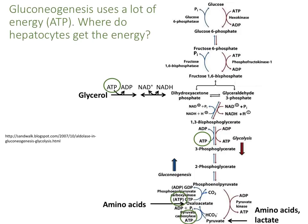Note also that gluconeogenesis requires a lot of energy — a lot of ATP. The carboxylation of pyruvate requires ATP. PEPCK requires ATP or GTP. There is also ATP utilized in the middle steps. If we're coming in from glycerol, there's ATP utilized there as well. Remember, the bottom part of this pathway involves 3-carbon intermediates, and you need two of them — they must be doubled — in order to make the 6-carbon glucose.